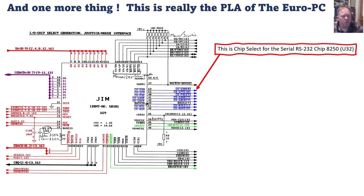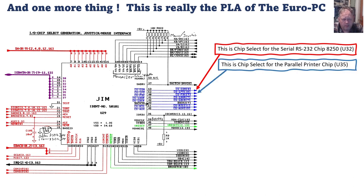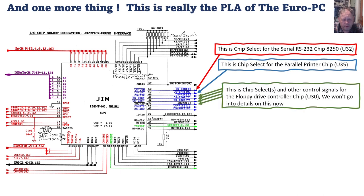The GYM chip is really the PLA of the Euro PC. For those who know the Commodore 64, the PLA is the one that controls the chip select. This GYM chip handles the chip select for the RS222 chip, the chip select for the parallel printer chip, and four different chip selects and control signals for the floppy drive controller chip — we won't go into details now because that's irrelevant until we get some other things working on this computer.